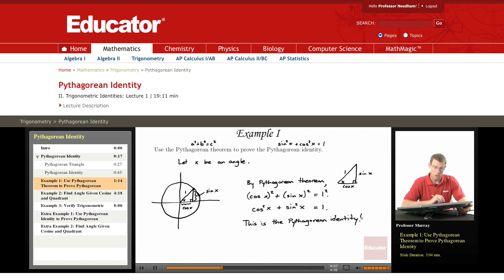So what we've done is we started by assuming the Pythagorean Theorem, and then we used the Pythagorean Theorem to derive the Pythagorean identity. Let's see an application of that.